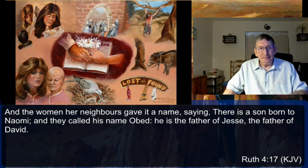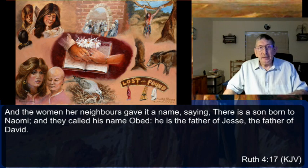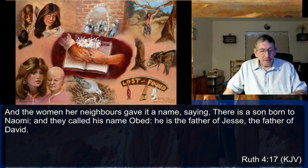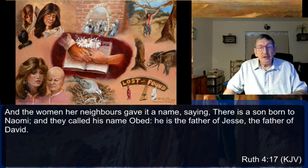Hagar was a slave woman for Sarah — actually an Egyptian. When Sarah couldn't conceive a child, she offered Hagar her handmaid to her husband to have a baby with, and they had Ishmael. Multiple marriages were common in this time frame. But God still made sure that Hagar was given her due rights as a wife of Abraham.